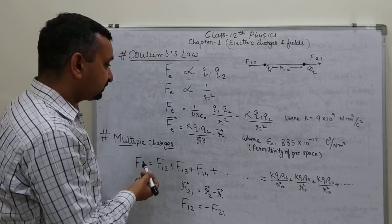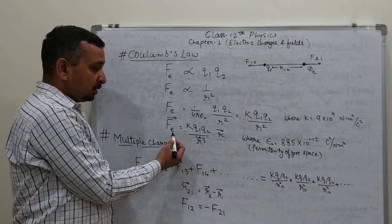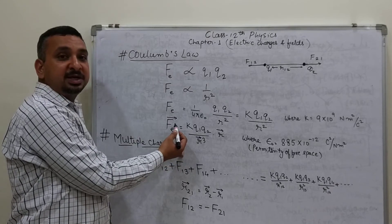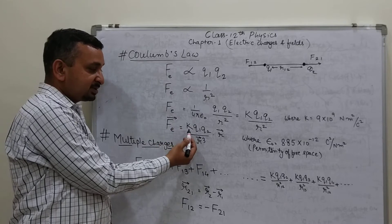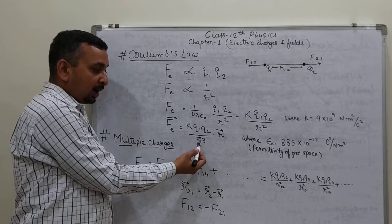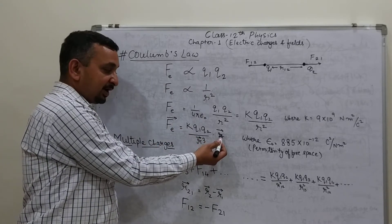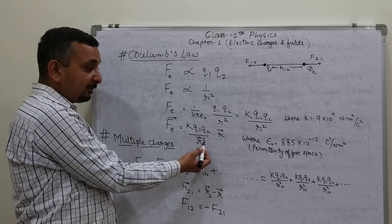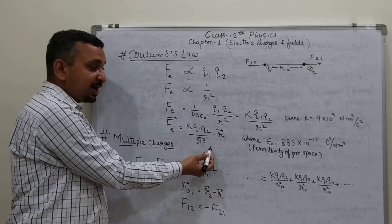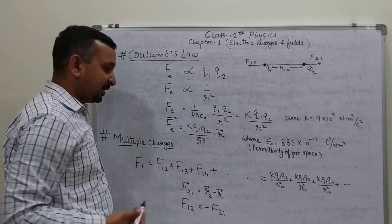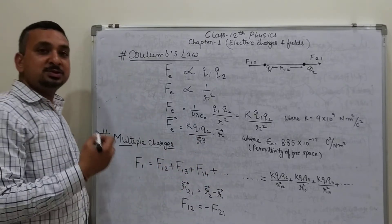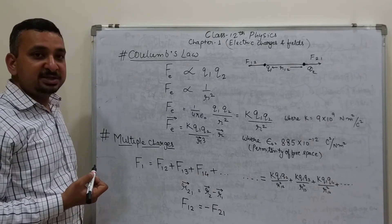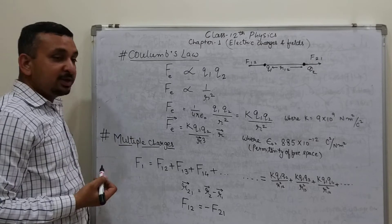Now the electric force can be represented in vectorial form as k·q1·q2 upon r-square times r-hat, where we multiply the numerator and denominator by r-vector. This is Coulomb's law in vector form.